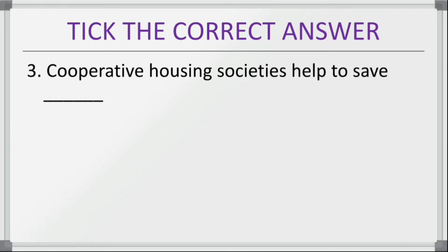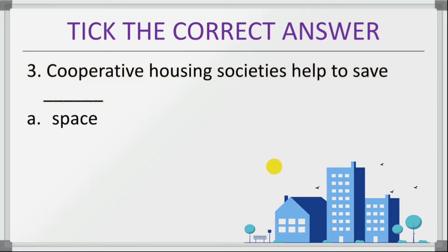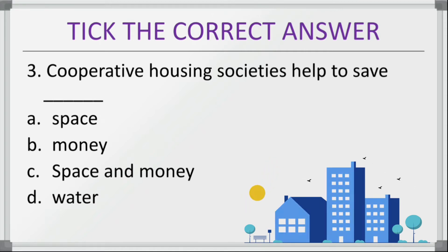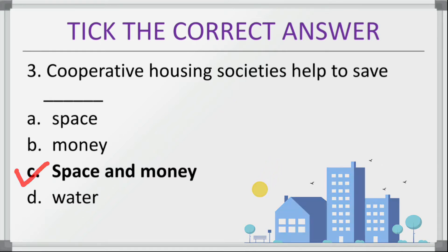Third question: cooperative housing societies help to save — options are space, money, space and money, or water. The correct answer for this question is space and money. So cooperative housing societies help us to save space and money.